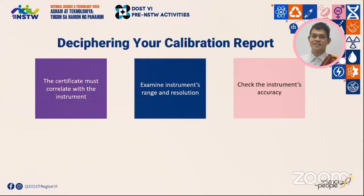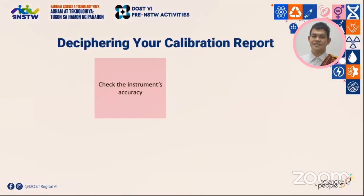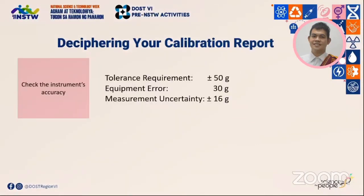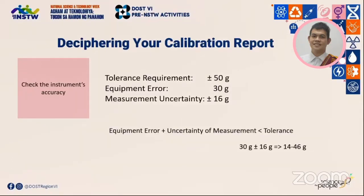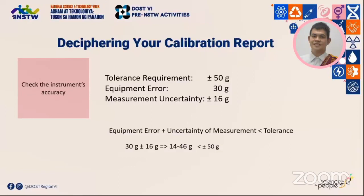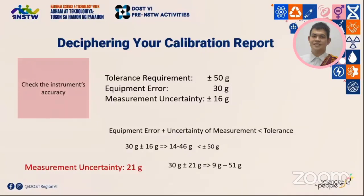When checking the accuracy of the instrument, the uncertainty of measurement should also be considered. For example, if the required accuracy of the measurement is plus or minus 50 grams, then the maximum error reported on the certificate plus the measurement uncertainty should be within that value. If the maximum error is stated as plus 30 grams and the uncertainty of measurement is plus or minus 16 grams, combining these values gives a range of 14 to 46 grams — less than the tolerance value of 50 grams, giving assurance of compliance. If the uncertainty becomes 21 grams, the range would become 9 to 51 grams, which exceeds the plus 50 gram tolerance, meaning the device will not comply with the required accuracy.